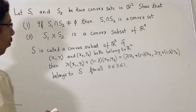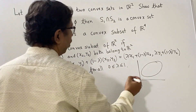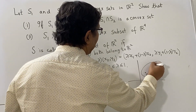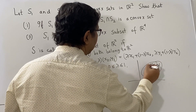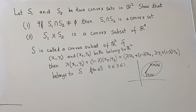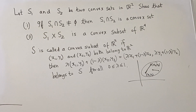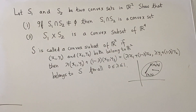In diagrammatic form, one can think of an oval-like shape. If you have two points (x1, y1) and (x2, y2), then this entire line segment belongs to the set. So if you take any two points, the line segment joining these two points belongs to S. If that happens, then we say that a set is a convex set. We will use this definition here.